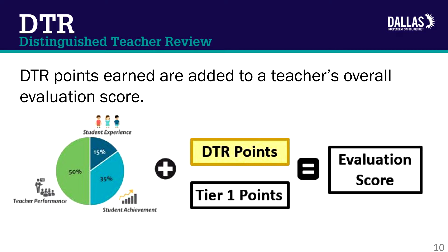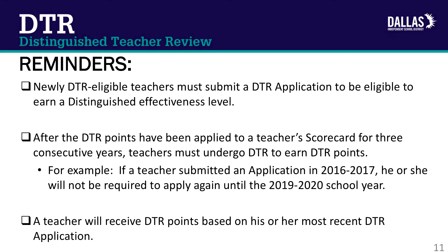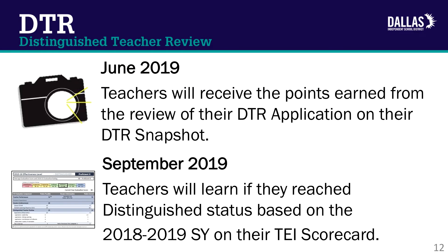DTR eligible teachers are also eligible to earn Tier 1 points. Tier 1 points are earned by teaching at a Tier 1 designated school that has not met state or federal accountability. Additional information on Tier 1 points can be found in the 2018-2019 TEI Guidebook. Additionally, please remember: 1. Newly DTR eligible teachers must submit a DTR application to be eligible to earn a Distinguished Effectiveness Level. 2. After the DTR points have been applied to a teacher's scorecard for 3 consecutive years, teachers must undergo DTR again to earn DTR points. For example, if a teacher submitted an application in 2016-2017, he or she will not be required to apply again until the 2019-2020 school year. 3. A teacher will receive DTR points based on his or her most recent DTR application. Teachers will receive the points earned from the review of their DTR application on their DTR snapshot by June 2019.